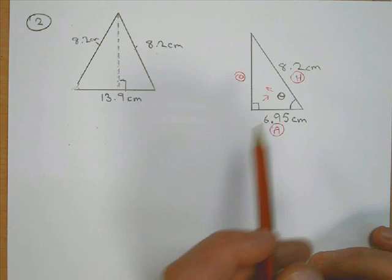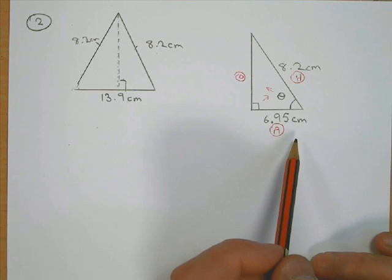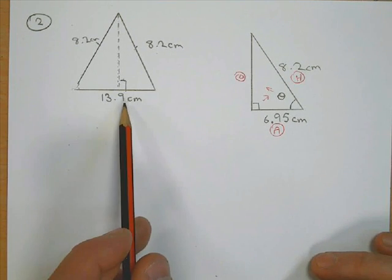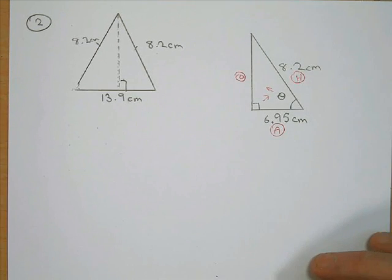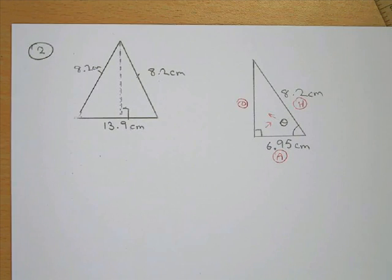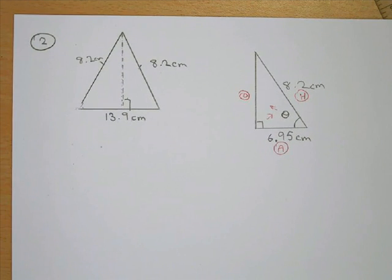The 6.95 came from half of 13.9. Now, to work out the angle, we have to use SOHCAHTOA.